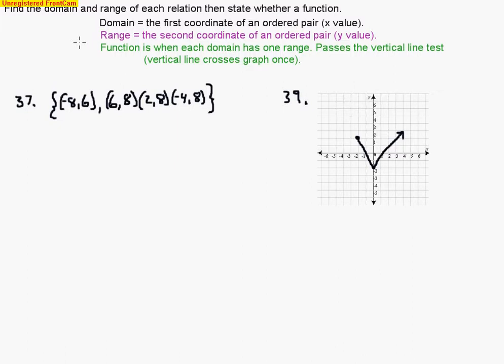Remember I wrote up here that domain represents the first coordinate of an ordered pair. So let's take a look at those domains in number 37. The first component of the ordered pair is the x value. These are our domains: negative 8, 6, 2, negative 4. That's it, just those numbers. So we'd write down negative 8, 6, 2, negative 4, and that's all.